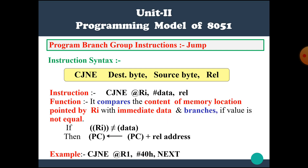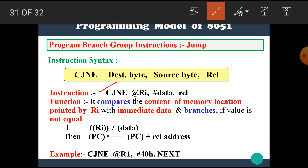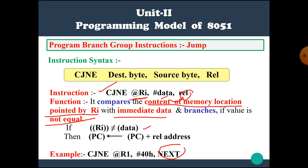The next instruction is CJNE @Ri, immediate data, relative. Here, indirect addressing mode is used and Ri (R0 or R1) is a pointer to a memory location. If the memory location pointed to by R0 or R1 is not equal to the immediate data, then jump to the relative address. Its function is to compare the content of the memory location pointed by Ri with immediate data and branch if the value is not equal.